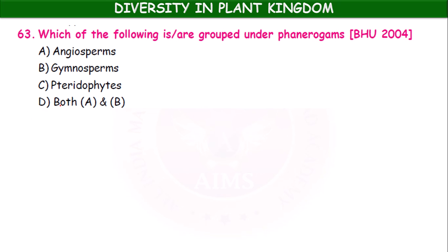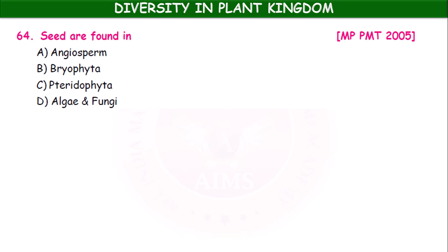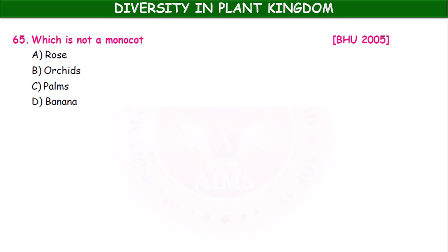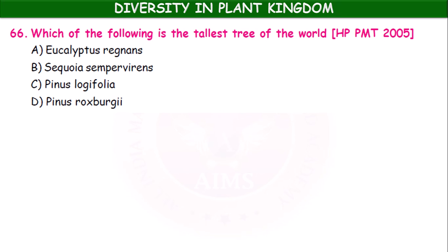Which of the following is grouped under phanerogams? Both angiosperms and gymnosperms are included in the phanerogams. Seeds are found in angiosperms. Which of the following is not a monocot? Rose, orchids, palms, banana — rose is a dicot.